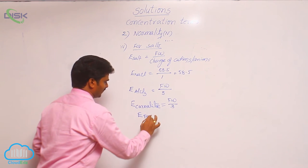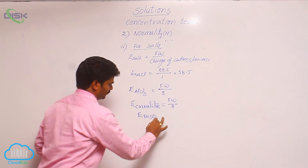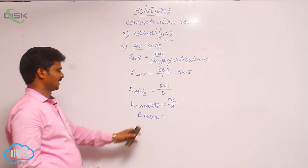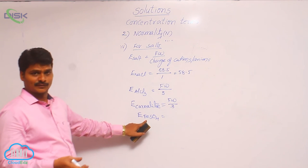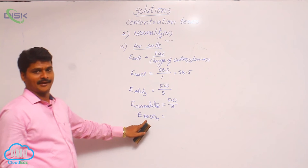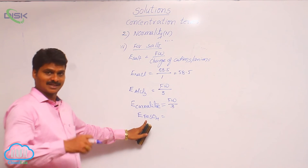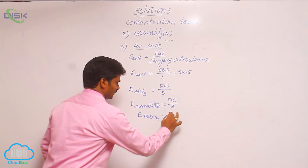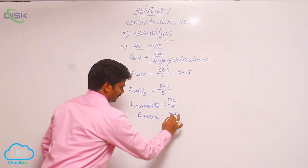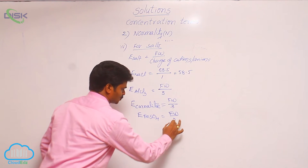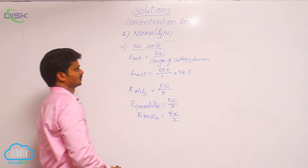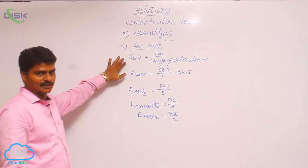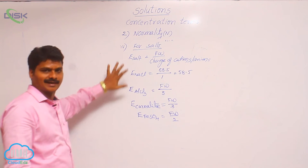Similarly, what is the equivalent weight of FeSO4? FeSO4 ionizes to Fe²⁺ and SO4²⁻, so the charge is 2 and n-factor = 2. Therefore, equivalent weight of FeSO4 = formula weight divided by 2. That is the formula to find out the equivalent weight of a salt.